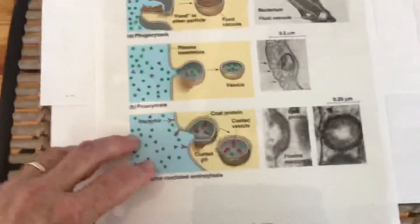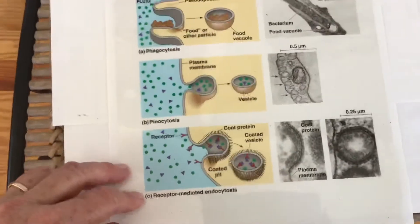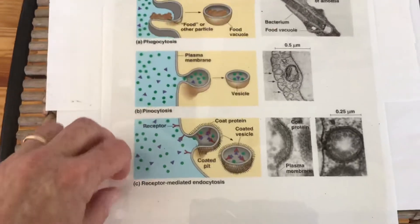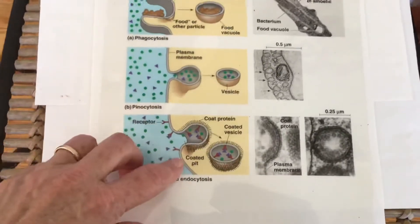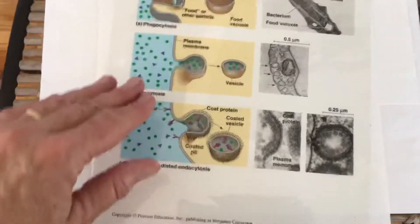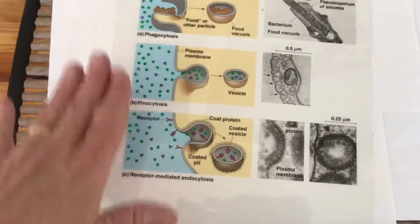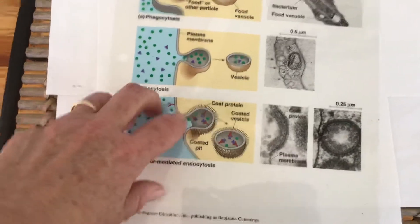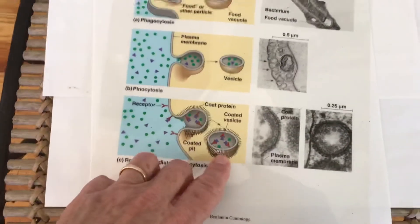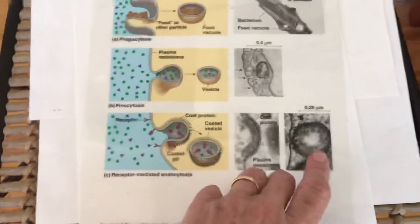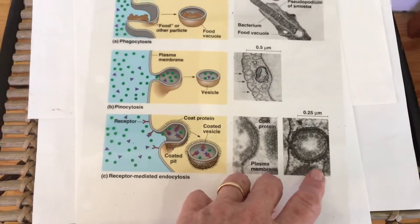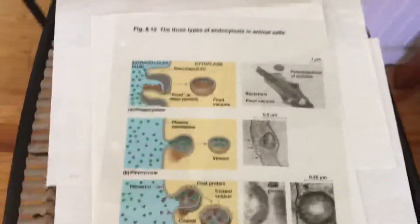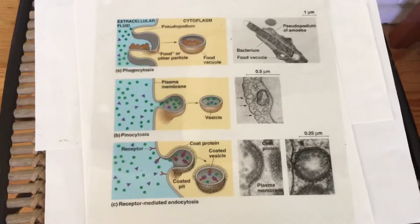Or you can have what they call receptor mediated endocytosis and this is where there's receptors on the outside of the membrane that will pick up whatever molecules it wants. And once it gets full, all the receptors get full in a certain area, it will just infold in. This has a specific look to it, you can see inside the cell it has kind of a different look, but all of these are part of endocytosis.